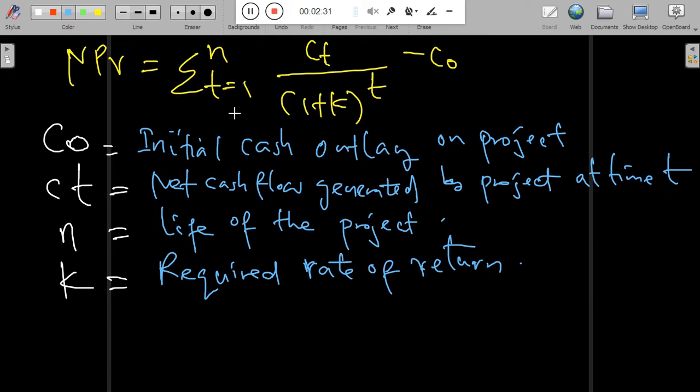What is n? N is the number of life, the life of the project, and R is what we refer to as the required rate of return.